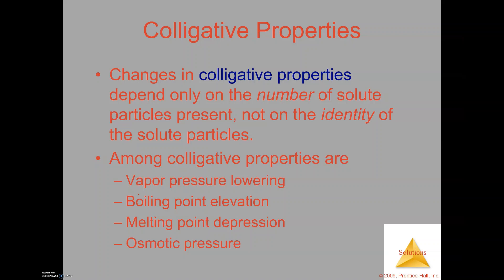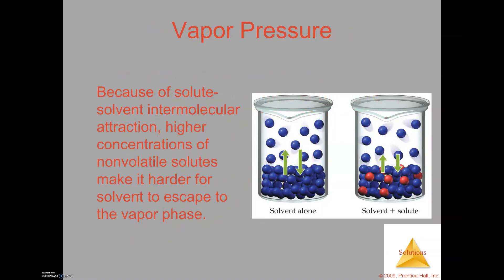We're going to be looking at all four of these in this video. The first one is vapor pressure. Vapor pressure is the pressure of the gas that is above the surface of the liquid. In the first beaker here, it's just the pure solvent by itself, so the solvent has its own vapor pressure to begin with. That vapor pressure is dependent on the temperature of the system — in this case we'll assume it's 25 degrees Celsius. At that temperature you have a certain amount of gases above the surface of the liquid, and those gases make up the vapor pressure for that substance, in this case water.